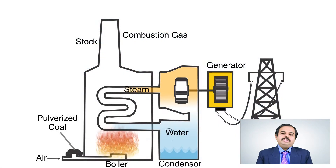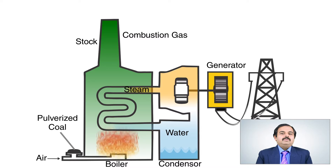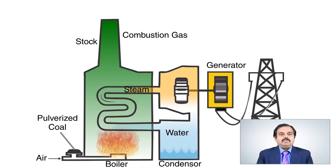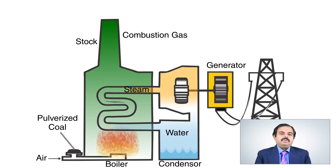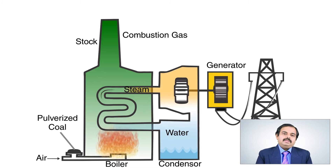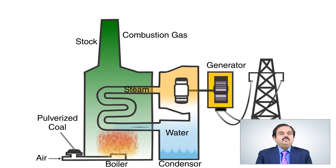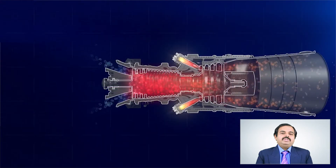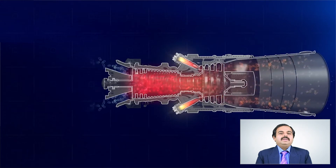If the working fluid is steam, it is called a steam turbine. The boiler heats the water to generate steam, and the kinetic energy and pressure of steam is used to rotate the steam turbine. The rotational energy of the turbine may be further used to rotate an electrical generator, to drive equipment like gears in industry, or to drive a propeller in the case of ships. If the working fluid is flue gas, it is called a gas turbine.